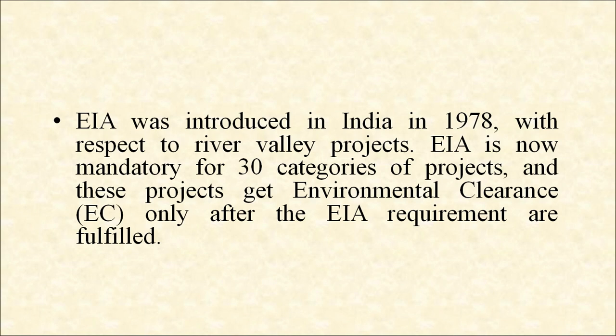EIA was introduced in India in 1978 with respect to river valley projects. EIA is now mandatory for 30 categories of projects, and these projects get environmental clearance only after the EIA requirements are fulfilled. Look at the figure — these industries include nuclear power and related projects, river valley projects, ports, harbors, petroleum refineries, chemical fertilizers, pesticides, petrochemical complexes and petrochemical intermediates.